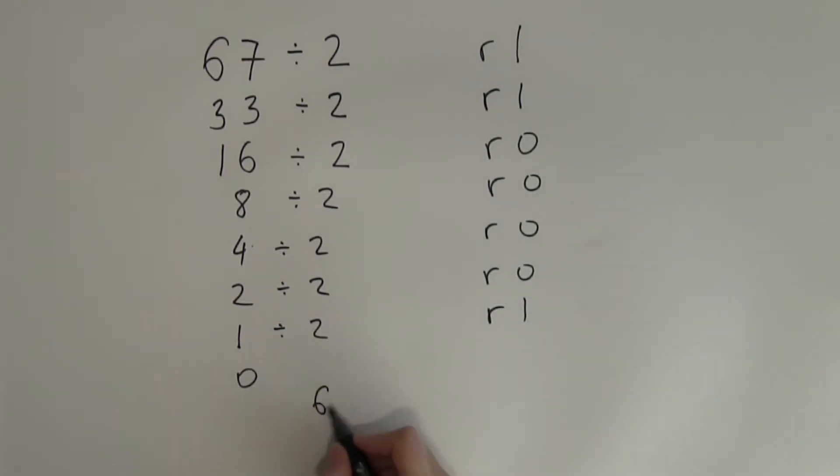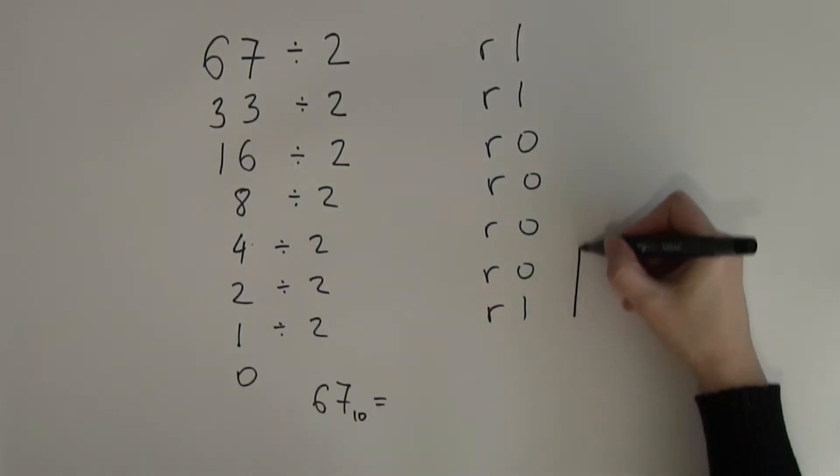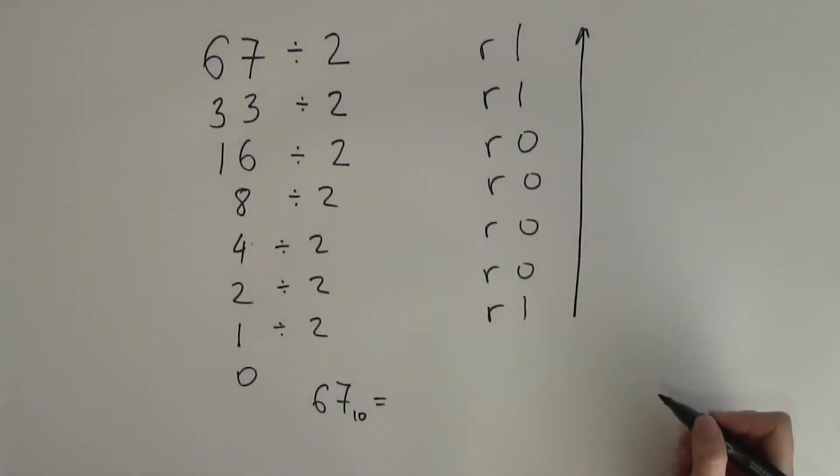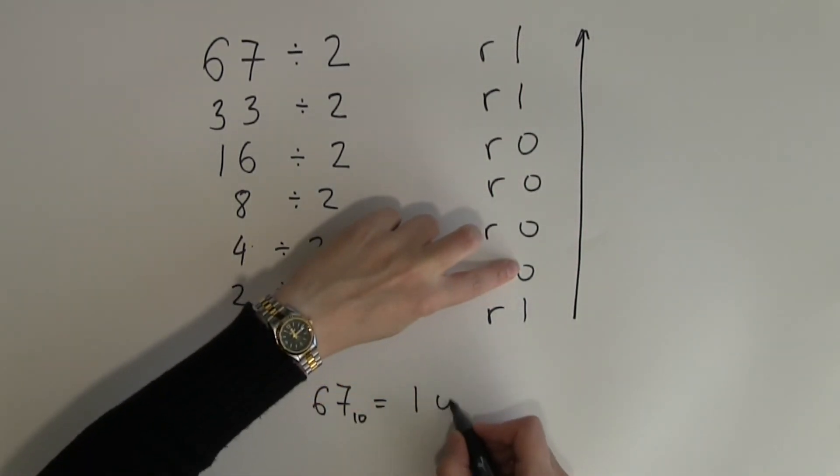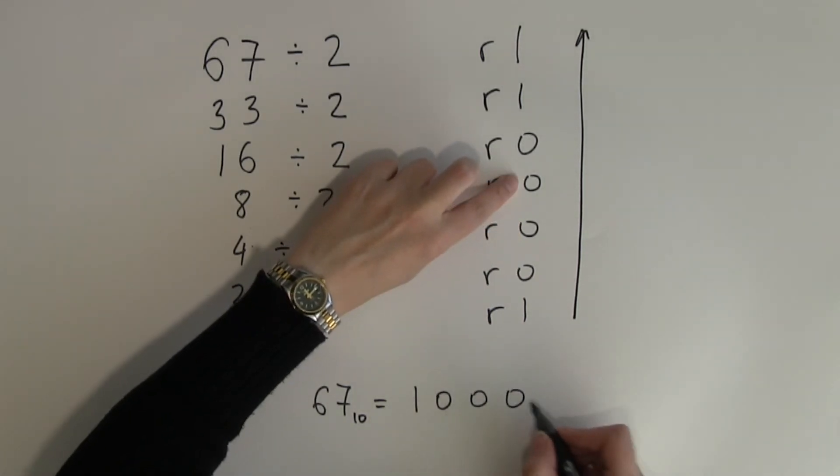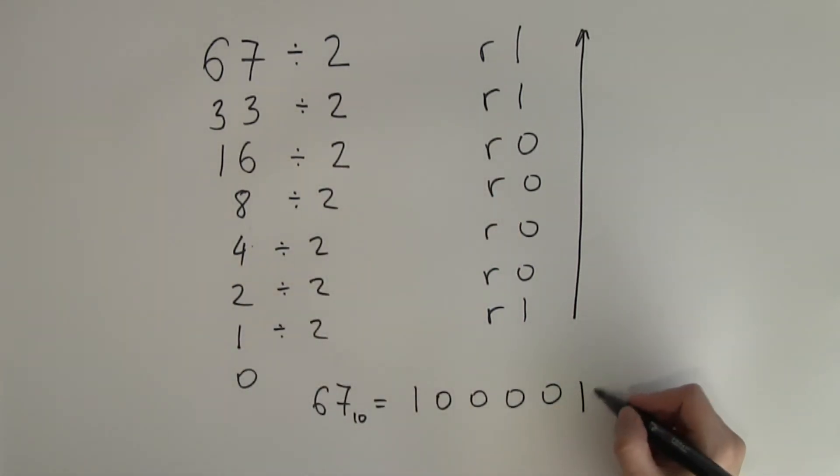So 67 in decimal is, again don't forget we need to copy down up, is 1, 1, 2, 3, 4 zeros and 1, 1 in binary. Just quickly double check.